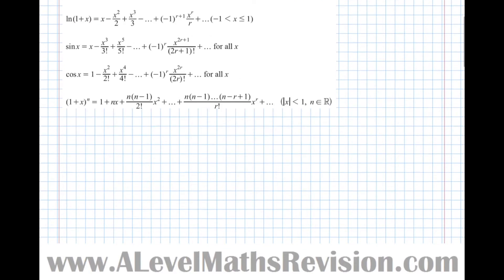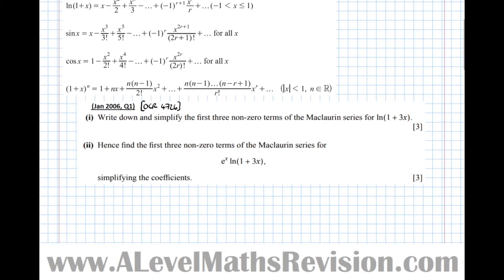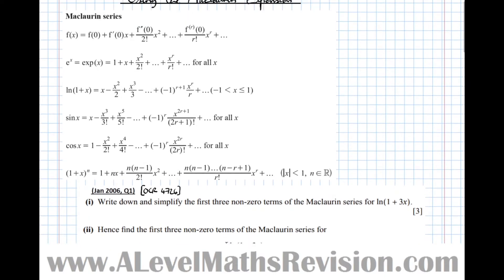Let's take this question here. It asks us first to write down and simplify the first three non-zero terms of the Maclaurin series for the natural log of 1 plus 3x. So let's have a look at the formula now, see if there's any that look helpful. The one that most closely matches and appears to be most useful is this one that I'm highlighting yellow. But it doesn't say 1 plus 3x, it says 1 plus x.